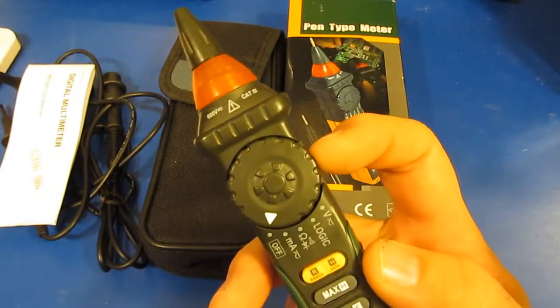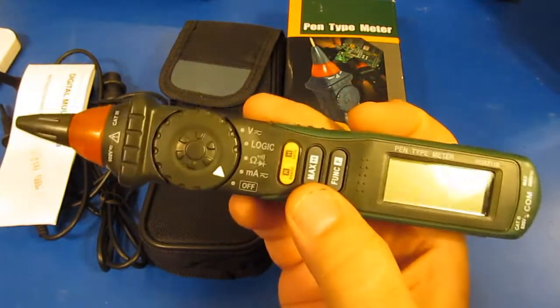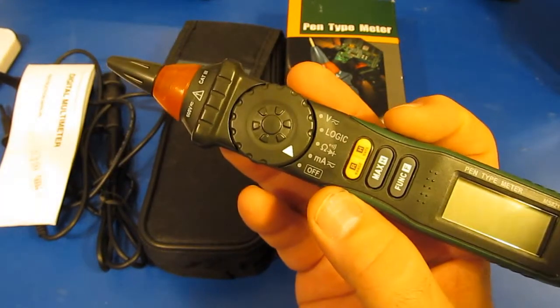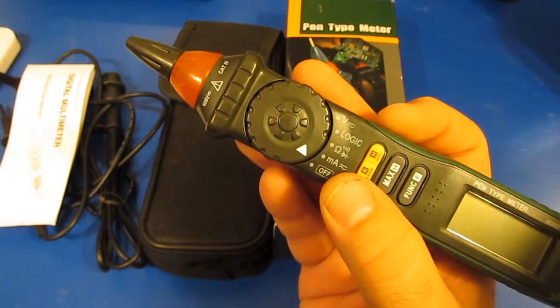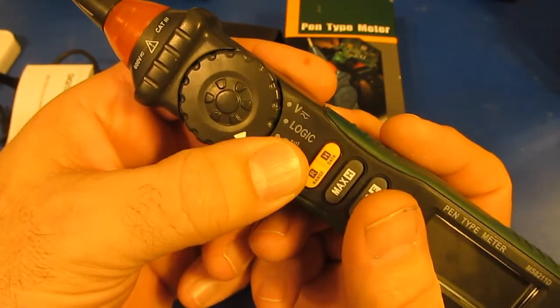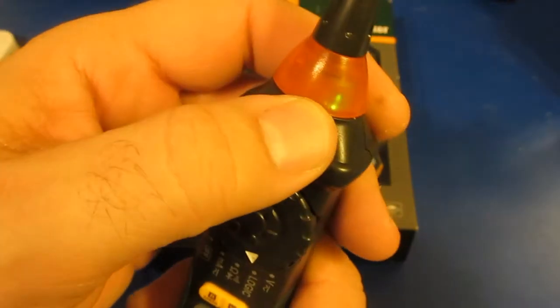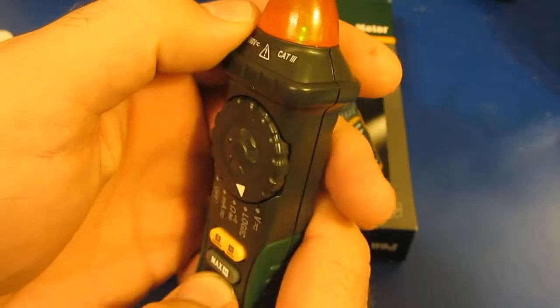For both the AC current and voltage modes it has a bandwidth of 40 to 200 Hertz. It's an averaging meter only. You can see it has no backlight. It's got this interesting mode here for logic. So it's got two LEDs up in the top. One is red and the other one is green.